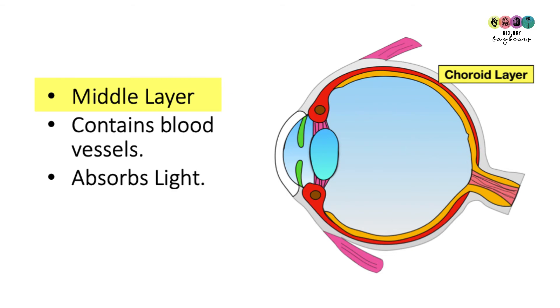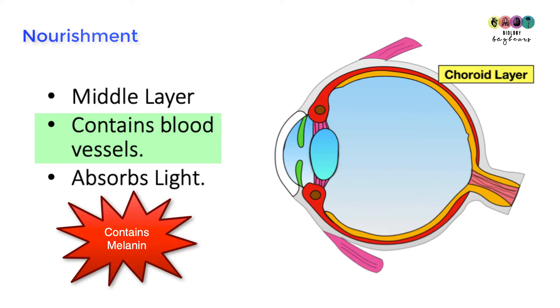The middle layer of your eye, the darkest layer, is known as the chloride layer. It contains many blood vessels. It also contains melanin so it's there to absorb light as well as provide all the nourishment to the eye and it's one of the reasons why light doesn't bounce around in the eye because the chloride layer absorbs it.